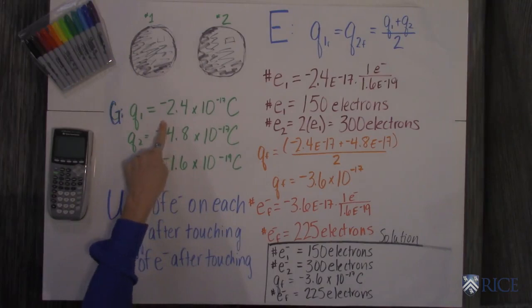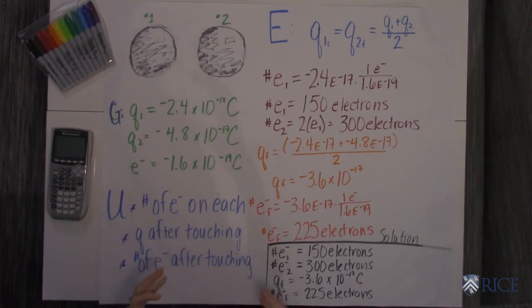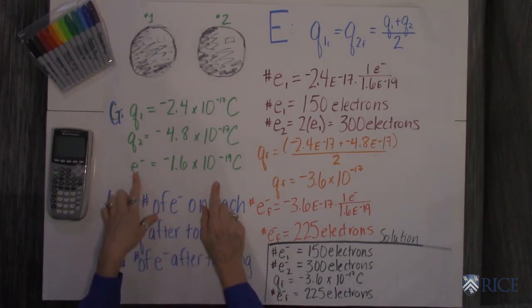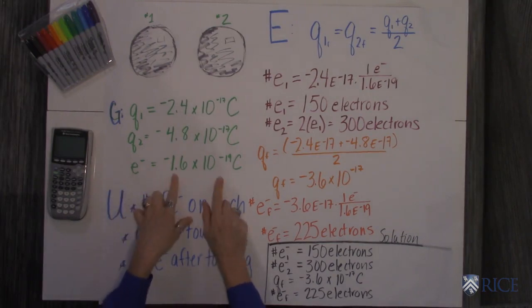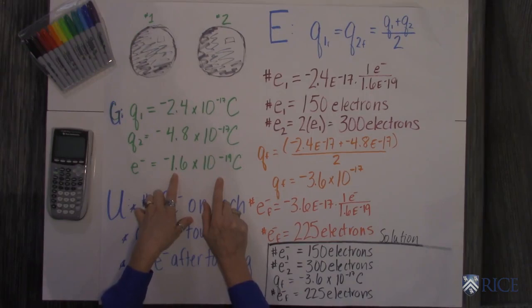The charge on one sphere is negative 2.4 times 10 to the negative 17th coulombs. The coulomb is actually a really big unit, as evidenced by the fact that the charge on one electron, which you need to know for this problem, is negative 1.6 times 10 to the negative 19th coulombs. So there's a lot of electrons in a coulomb. The second sphere is negative 4.8 times 10 to the negative 17th coulombs.